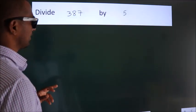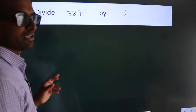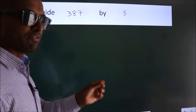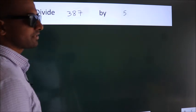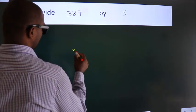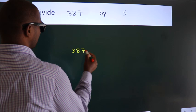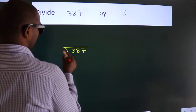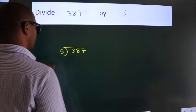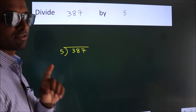Divide 387 by 5. To do this division, we should frame it in this way. 387 here, 5 here. This is your step 1.